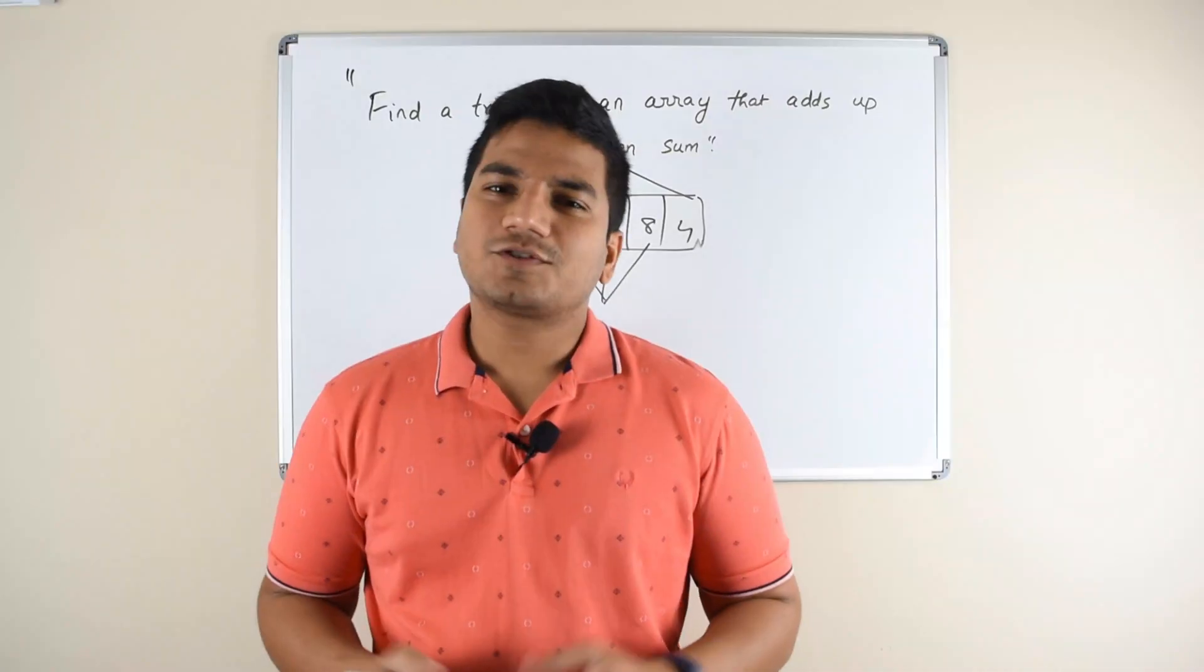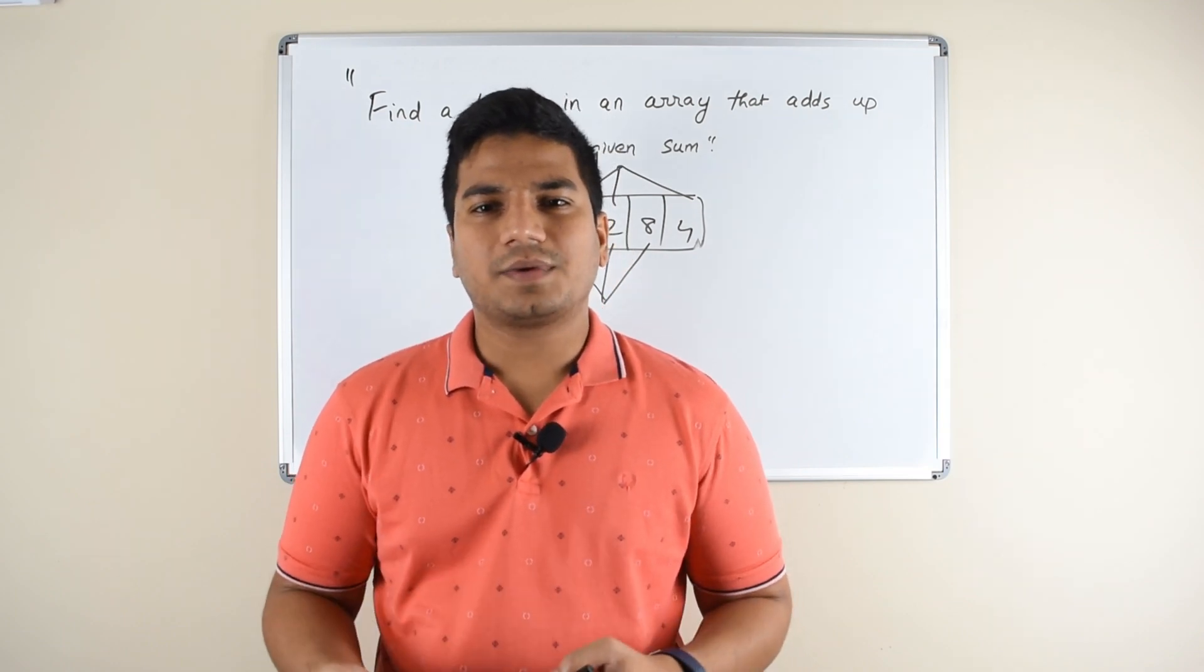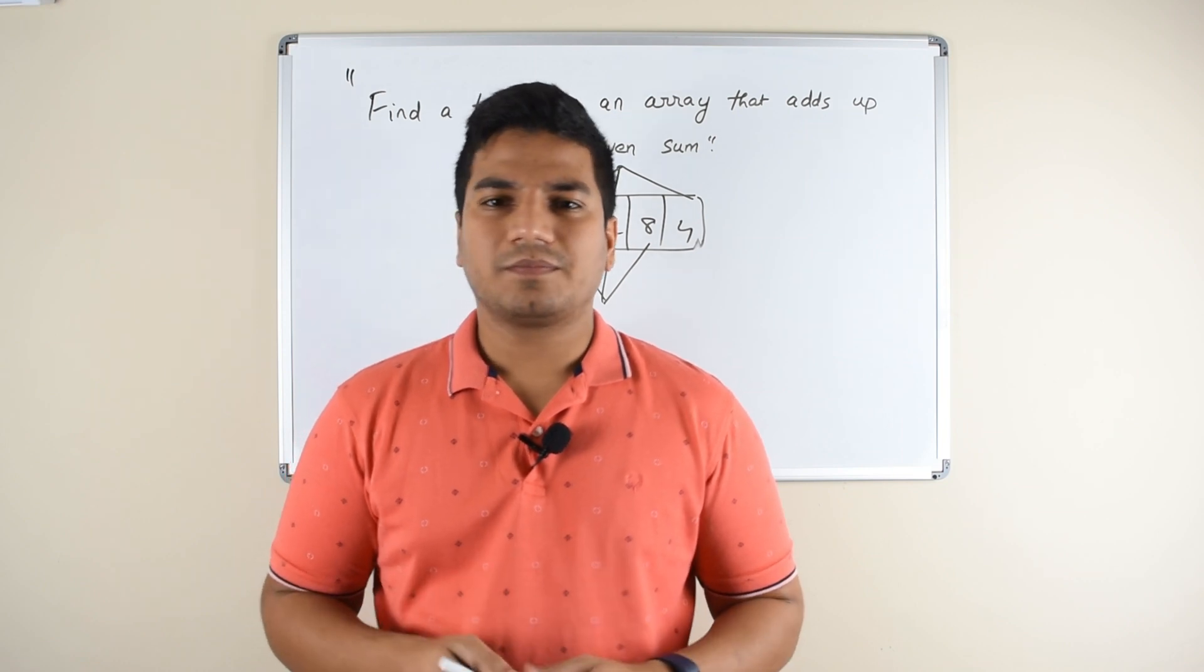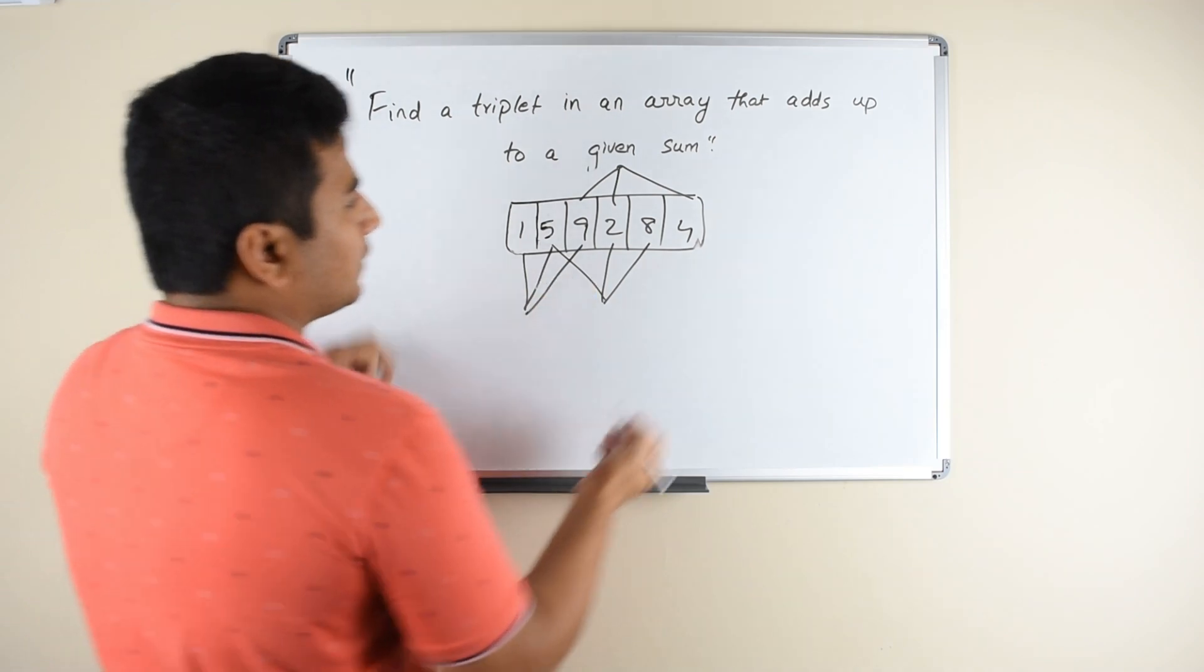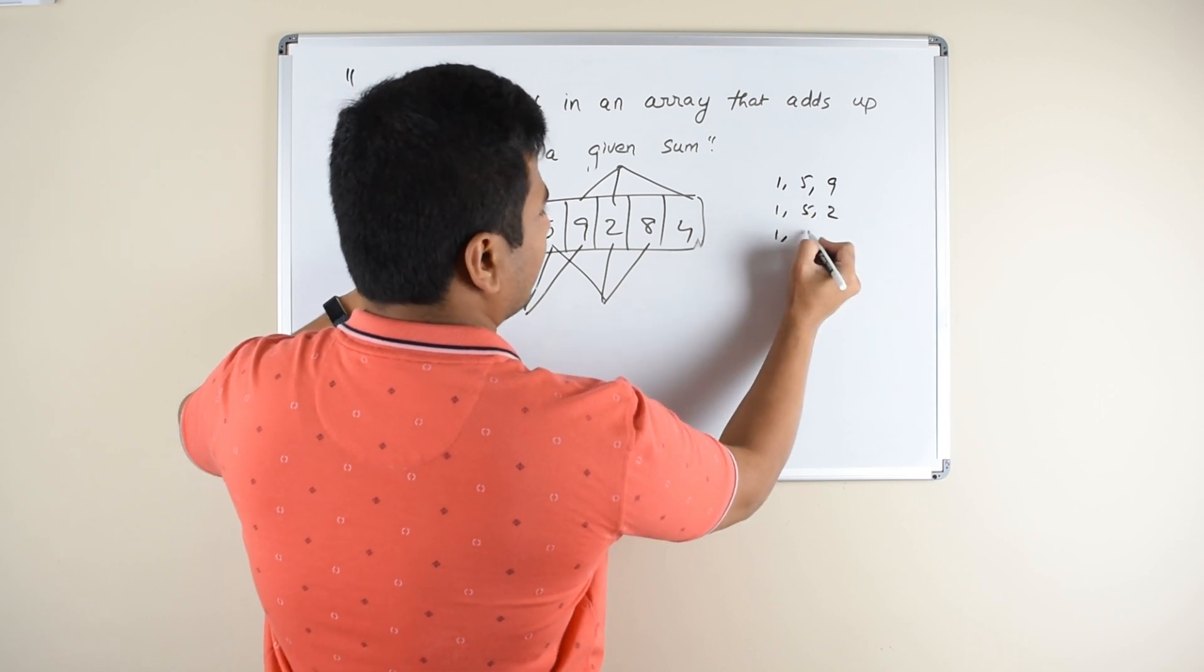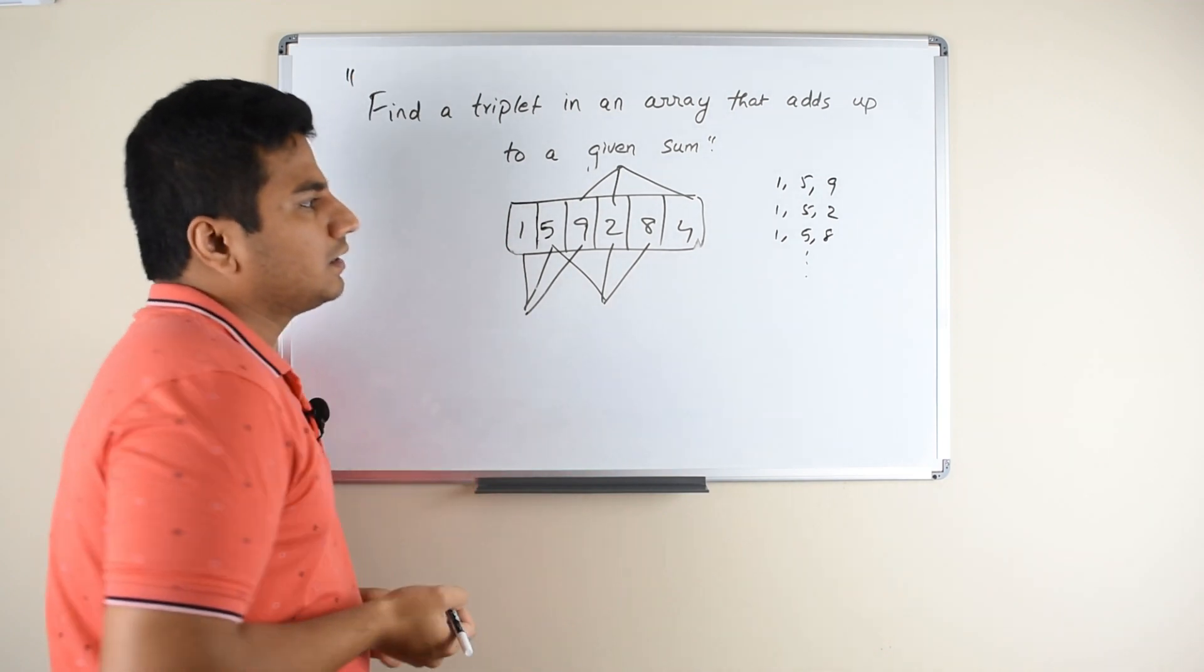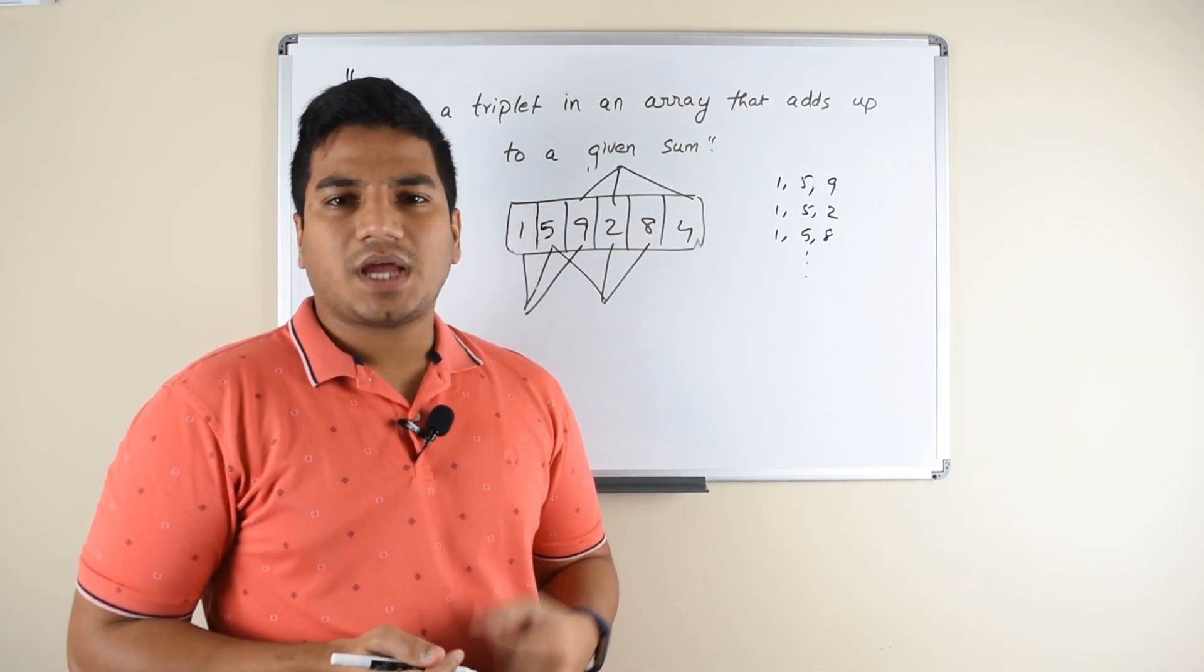The most straightforward and simplest solution for this problem would be to find the triplets in this array and see if any of these triplets add up to the sum 15. If you want to calculate the triplets in this array, it would be something like 1, 5, 9; 1, 5, 2; 1, 5, 8 - and so on. So let us take a look at the code for this approach.